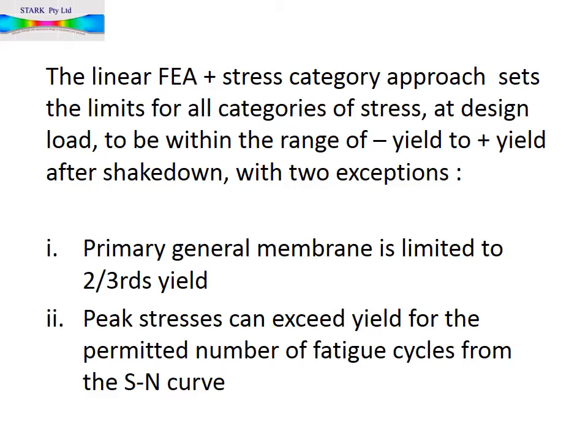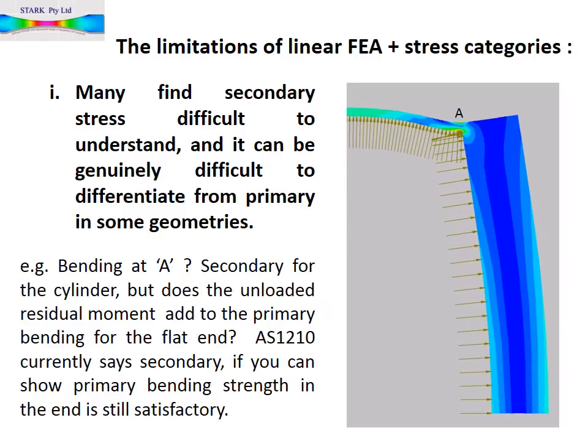In summary, the linear FEA stress category approach requires all categories of stress to be elastic at the design loading. That is, the application of the design load after shakedown should not result in stresses that are outside the plus yield to minus yield elastic stress range. There are two qualifications: primary general membrane stresses are limited to two-thirds yield, and peak stresses, while they may and often do exceed the yield strength, are limited in their number of cycles to comply with the relevant fatigue curve.